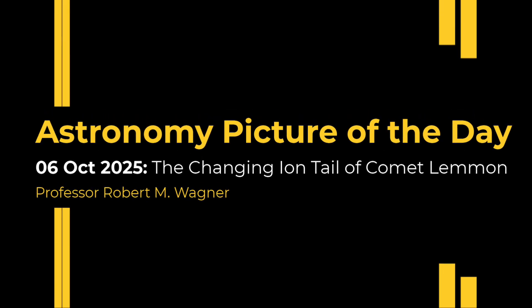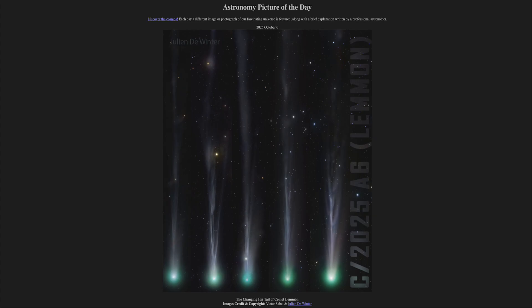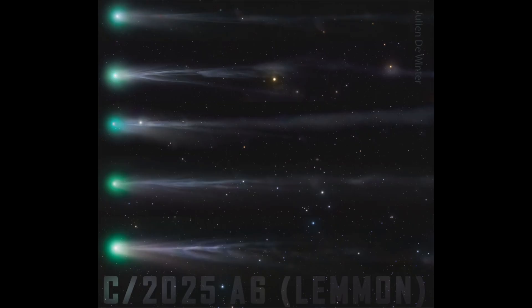Greetings and welcome to the Astronomy Picture of the Day podcast. Today's picture for October 6th of 2025 is titled The Changing Ion Tail of Comet Lemon.